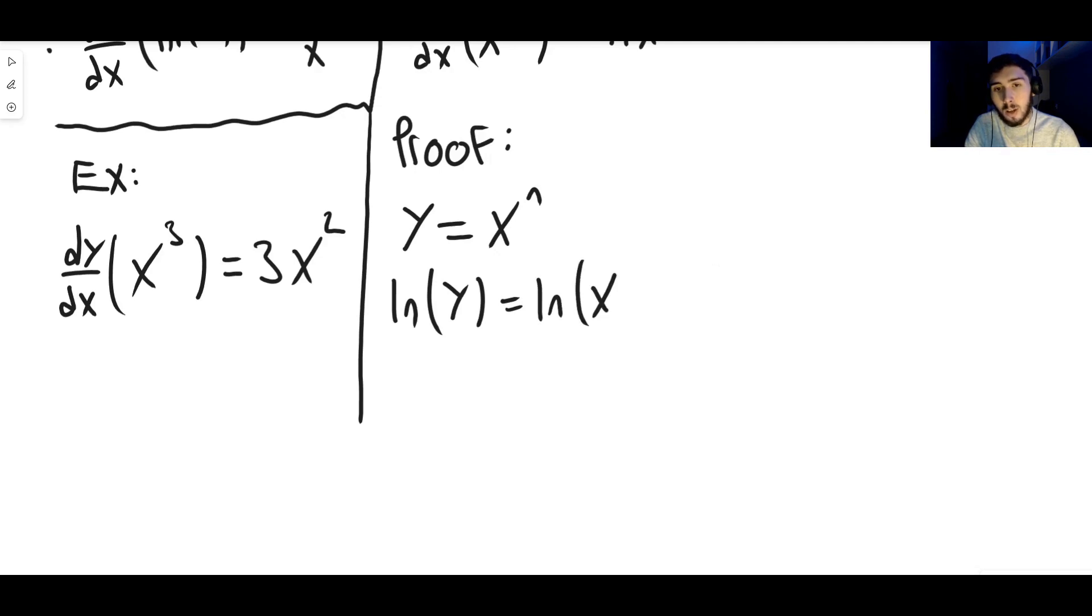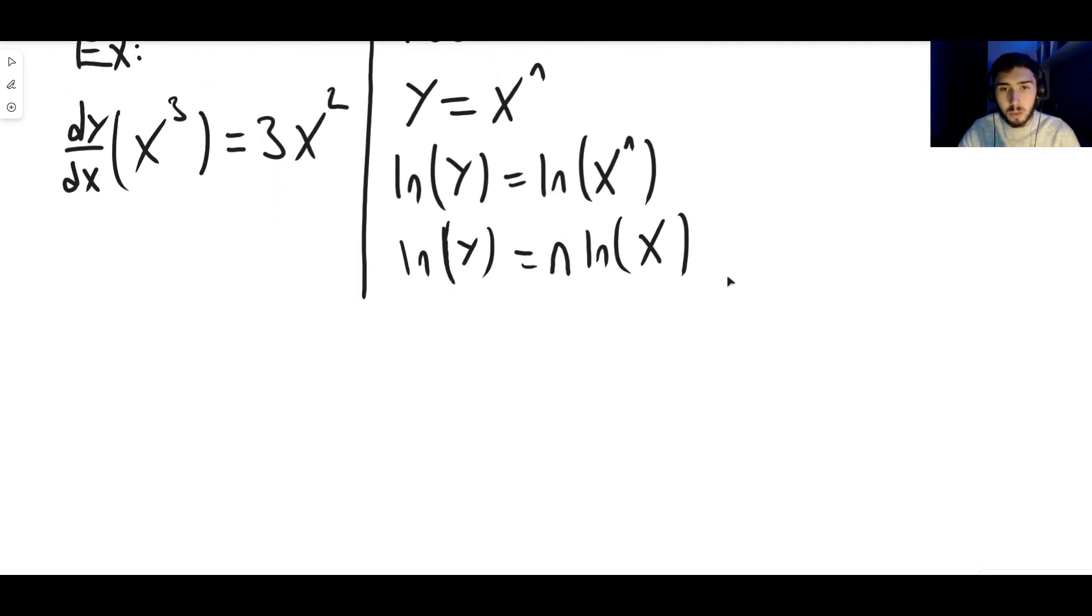Okay, so we take the natural log of both sides, just like that. And then we can use another type of power rule, the power rule for logarithms, which has nothing to do with the power rule of differentiation, mind you. And what the power rule for logarithms says is that if you have something to the power inside that logarithm, you can bring it out to the front like that. So that n in the power of the natural log of x to the n can just come down and multiply instead.